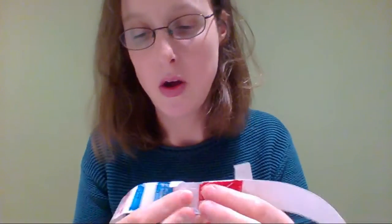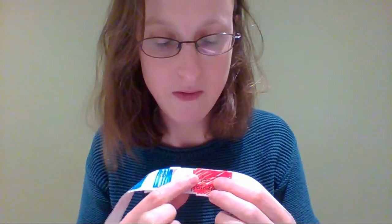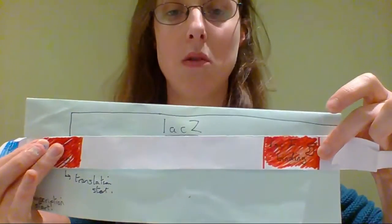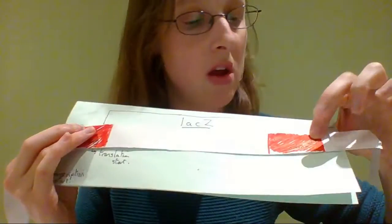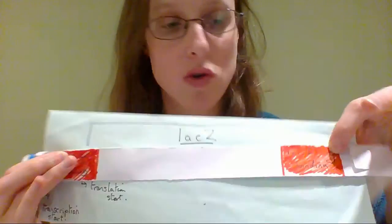So now we have got the lac operon with a lactose binding site up here, CRP binding site, the minus 10 and the minus 35, another lac I binding site, and then here we've got the operon. And there's another lac I binding site down here. Don't need to worry about this because lac I is gone, because now we've got allolactose because lactose was present in the environment.